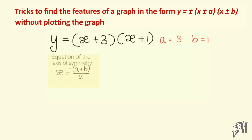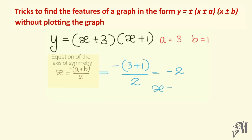To find the equation of the axis of symmetry, we substitute the values: minus (a plus b) divided by 2, which is minus (3 plus 1) divided by 2 equals minus 2. So x equals minus 2 is the equation of the axis of symmetry of this function.